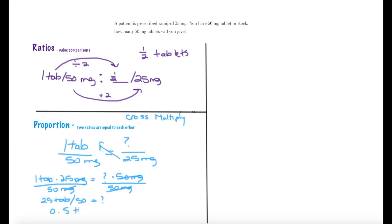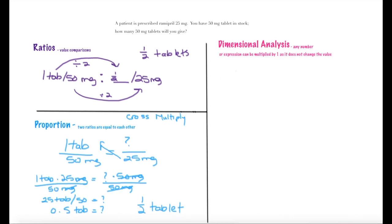With dimensional analysis, this is another problem-solving method that states you can multiply any factor or number by one as it does not change the outcome. So for example, I'm going to start out with what I want to know: how many tablets.